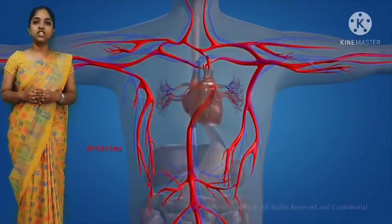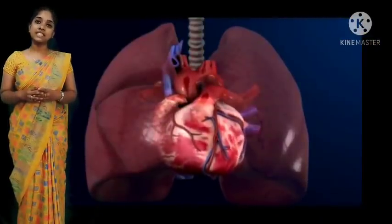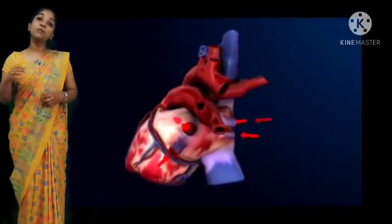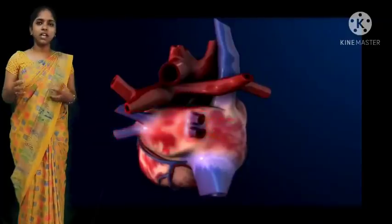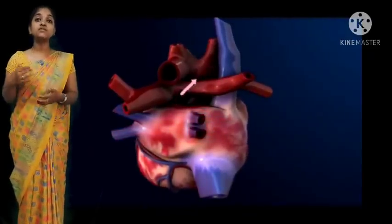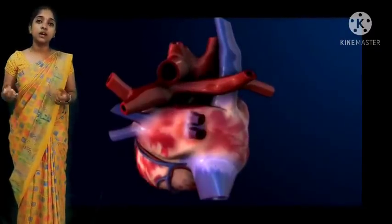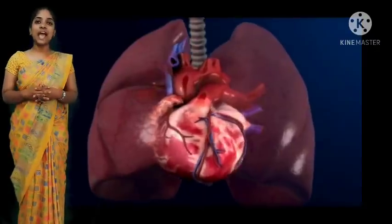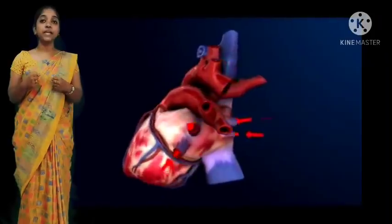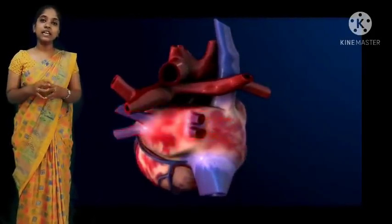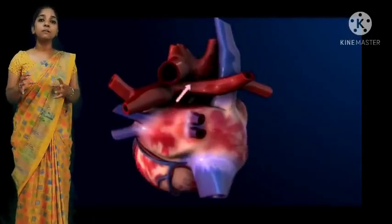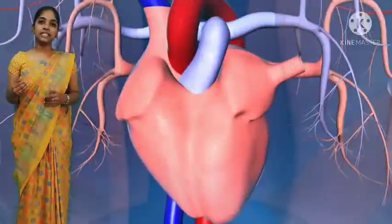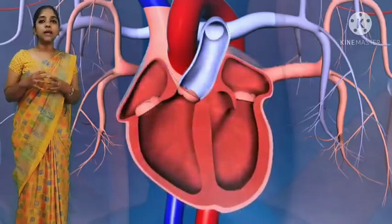When you do physical activities or exercise, the heart beats faster as it has to supply more oxygen to the body. The normal blood pressure for a human being is 120 by 80 mmHg. The mmHg is the unit of blood pressure. The size of a person's heart is the size of his or her fist.